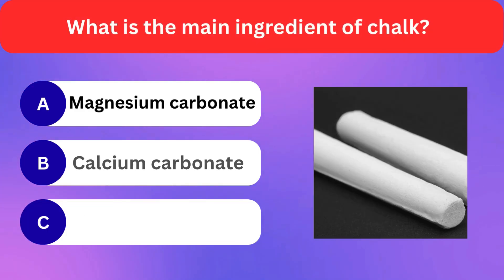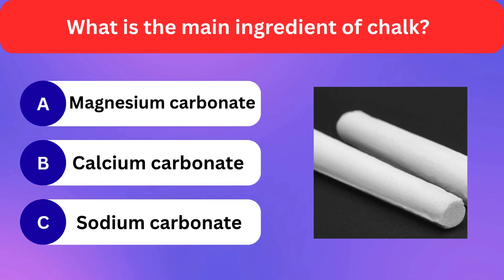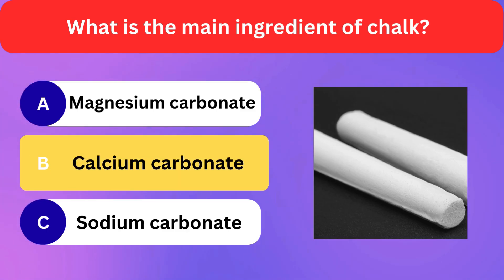What is the main ingredient of chalk? Magnesium carbonate, Calcium carbonate, Sodium carbonate. Correct answer is calcium carbonate.